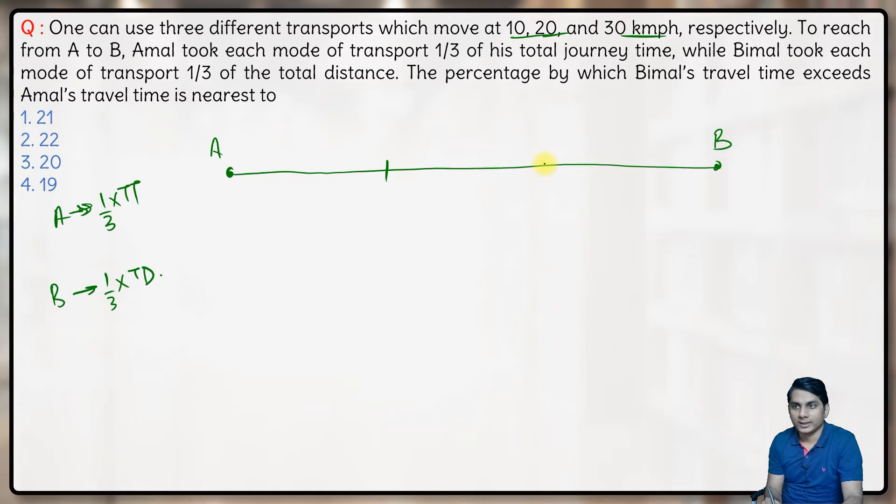Let's divide the total distance into three equal parts, and each part will be the LCM of 10, 20, and 30, which is 60 kilometers. So the total distance is 60 plus 60 plus 60, that is 180 kilometers.